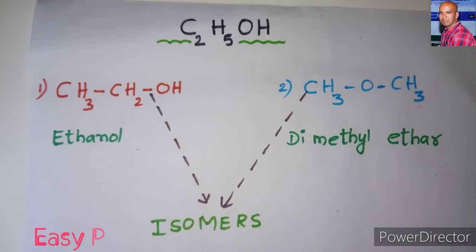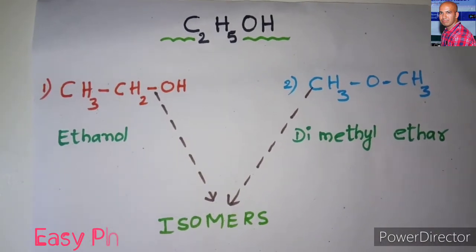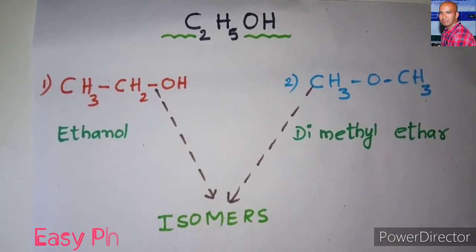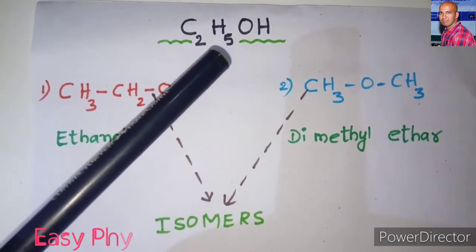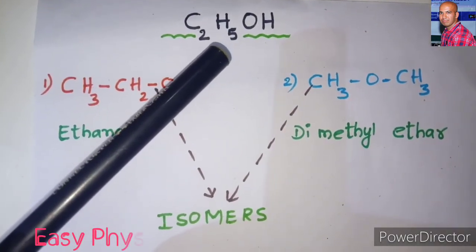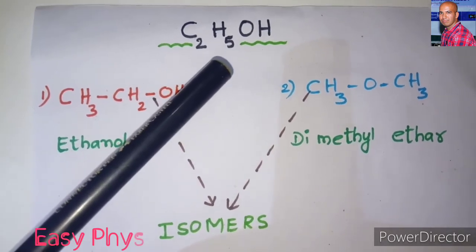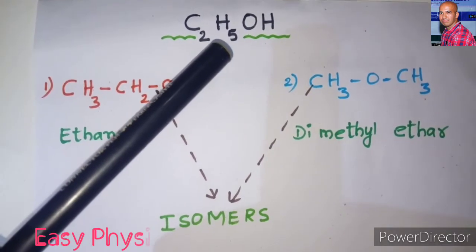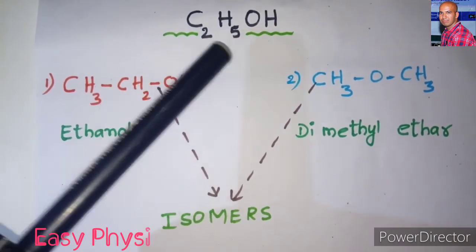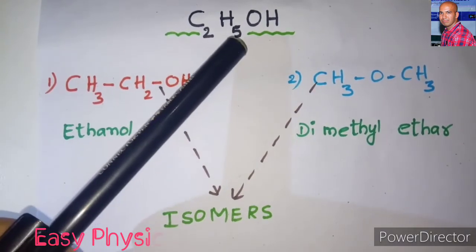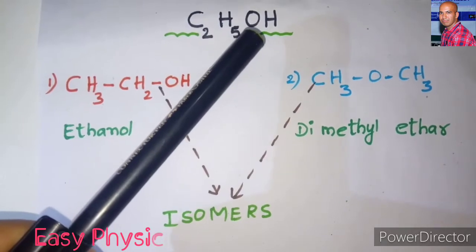Let us take a few examples to understand the concept of isomerism. Here we have one formula, C2H5OH, which means 2 carbon atoms, 6 hydrogen atoms, and 1 oxygen atom.